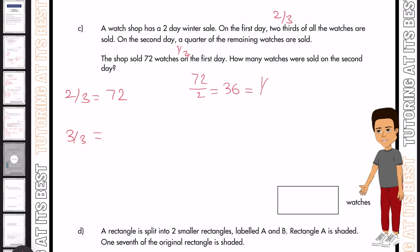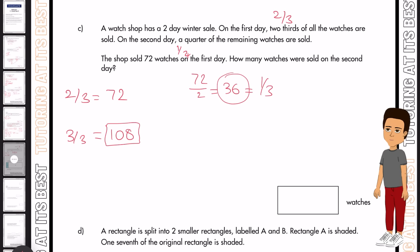So now we know two thirds equals 72. So how would we calculate three thirds? Well, the first thing we're going to do is divide 72 by two, and that will give us 36, which equals one third. And then times it by three to get us 108. So now we know that we had 108 watches in total.